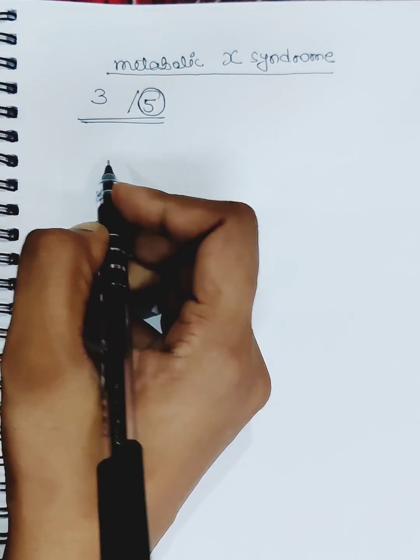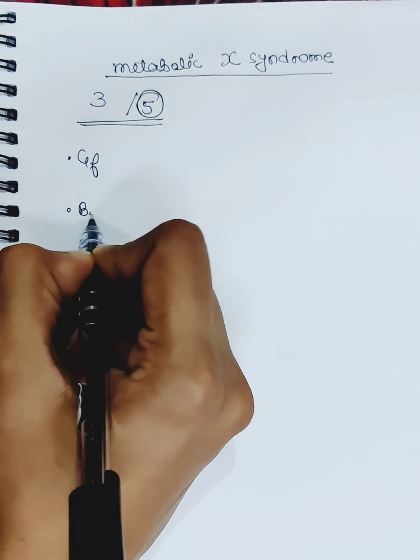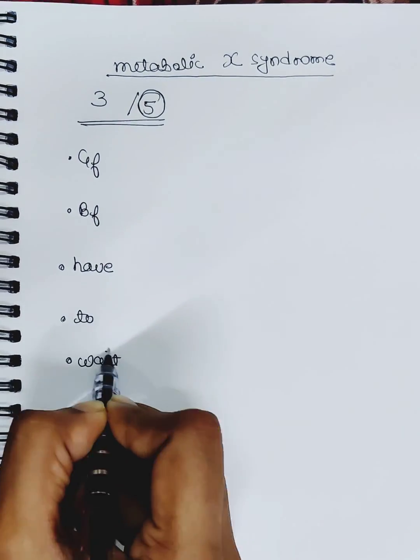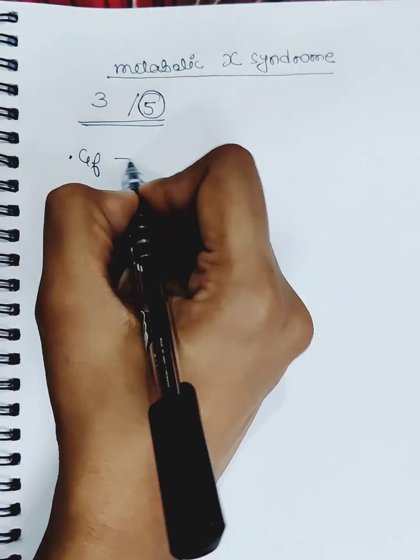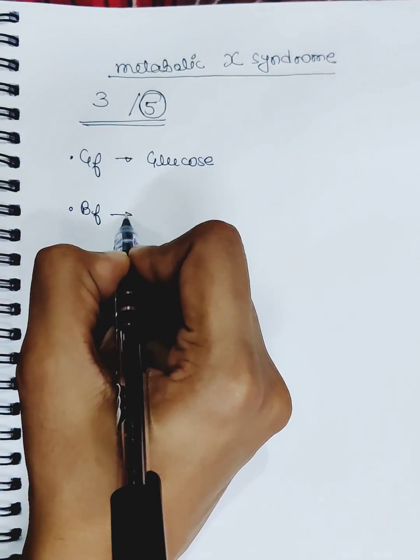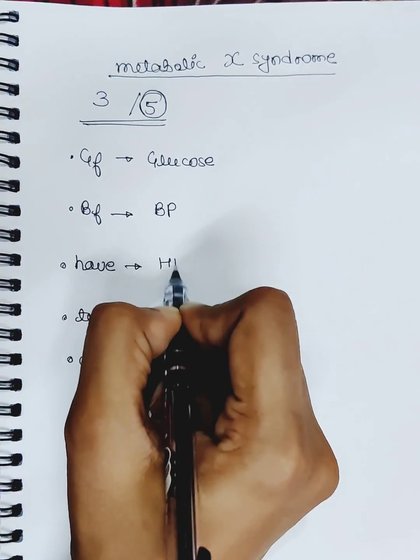The diagnostic criteria of metabolic X syndrome - the trick is girlfriend boyfriend have to wait. Here, girlfriend stands for impaired fasting glucose, boyfriend stands for BP, have stands for HDL cholesterol.